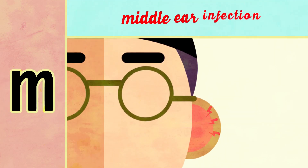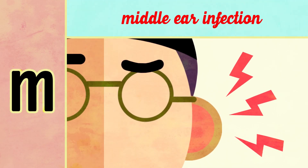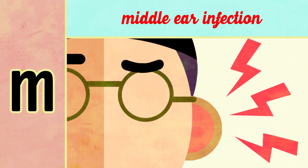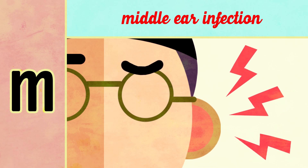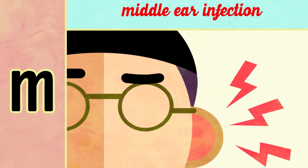M is for middle ear infection. DNS also predisposes to middle ear infection because the Eustachian tube, which is the only drainage source of the middle ear, opens in the nasopharynx, and DNS can cause its obstruction, resulting in middle ear infections.